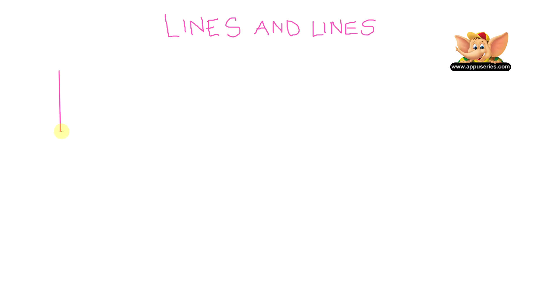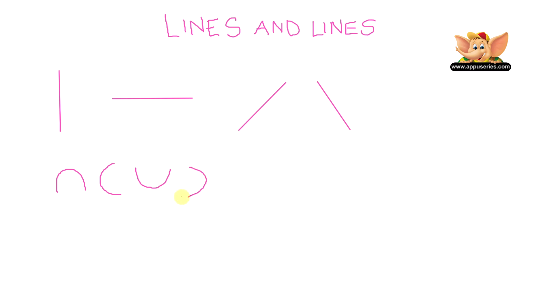This kind of line is called a standing line. This one is a sleeping line. And you see these lines here? They are called slanting lines. There are also curved lines. They look like this, or like that, or like that, or like that. These are all called curved lines.